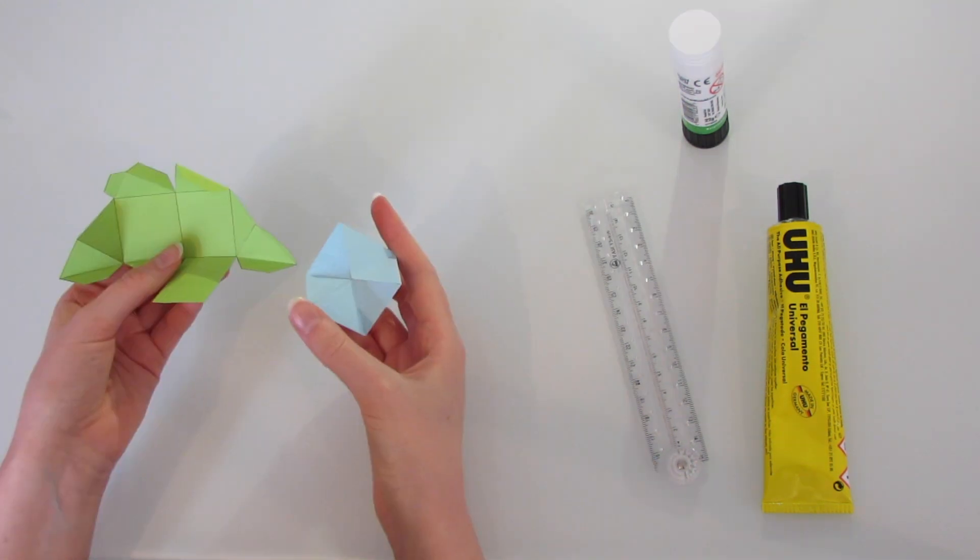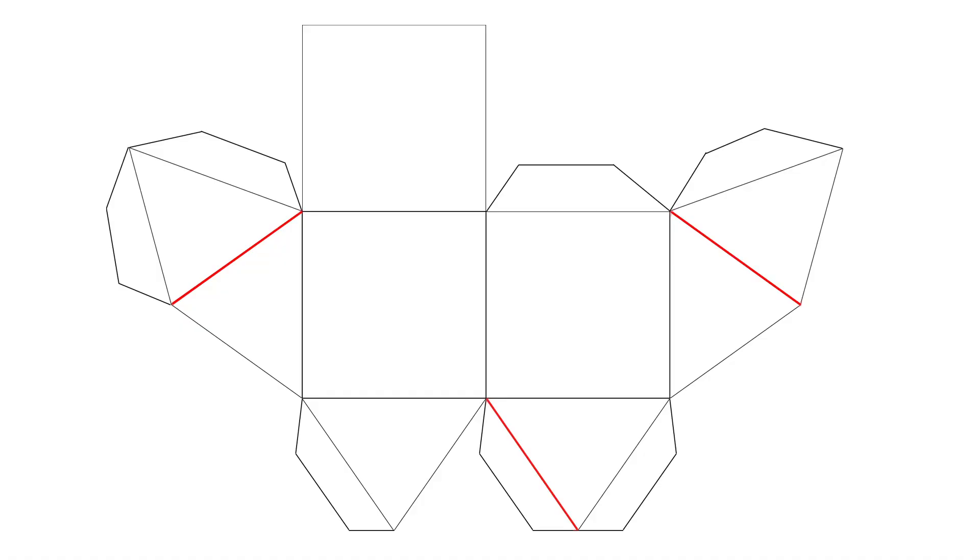Alternatively, you can fold along these lines in both directions. Here is a net with these lines coloured in red.